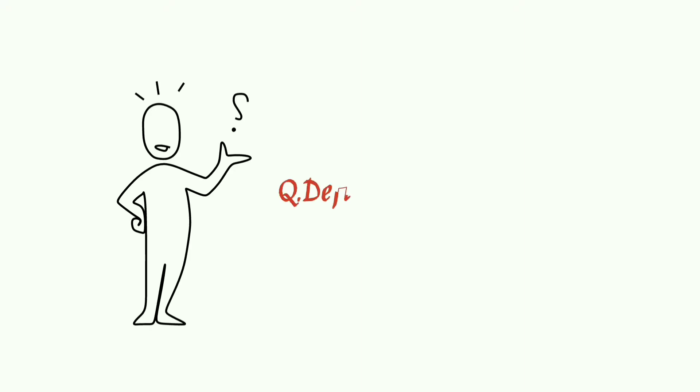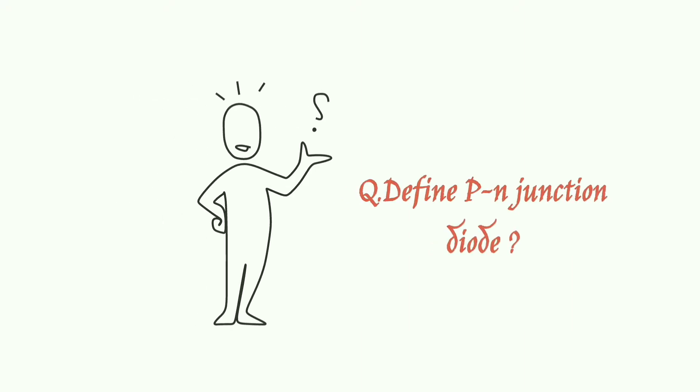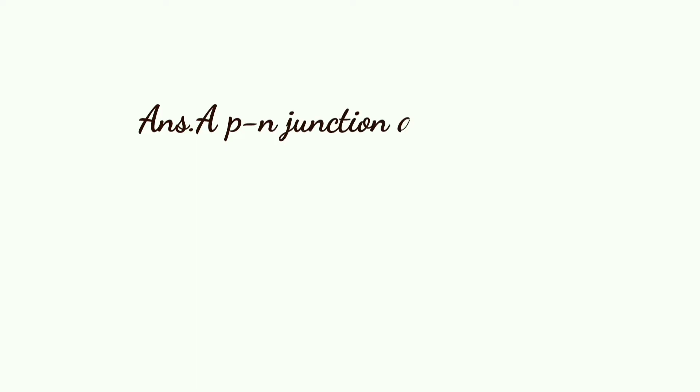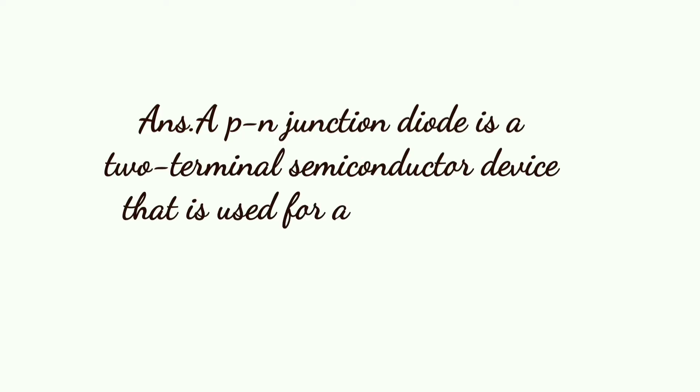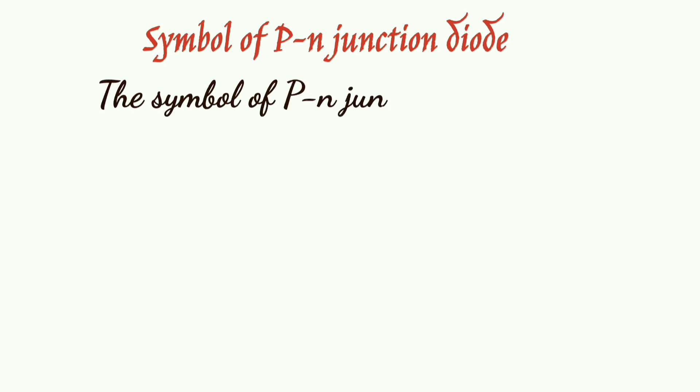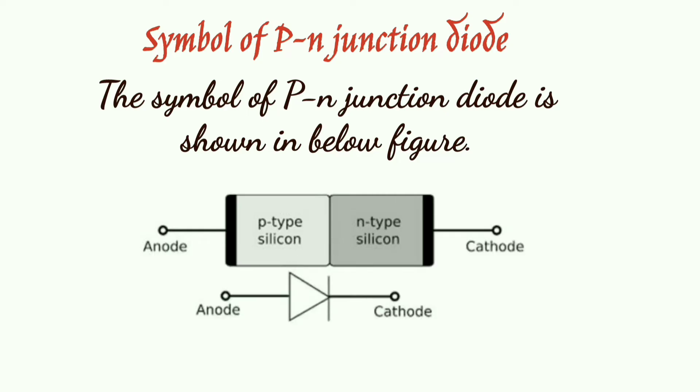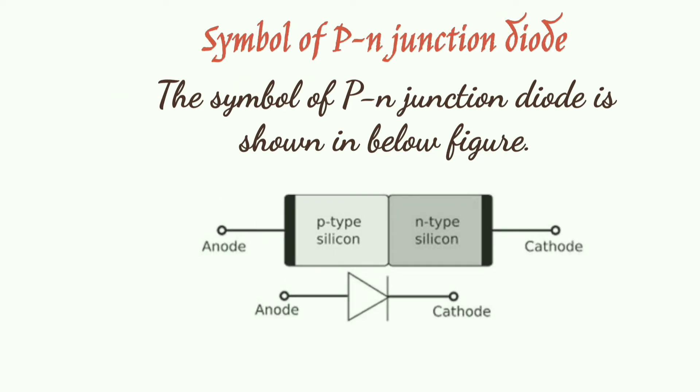A p-n junction diode is a two-terminal semiconductor device that allows electric current in one direction. The symbol of the p-n junction diode is shown in the figure below.